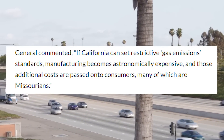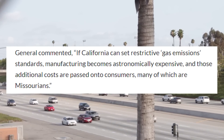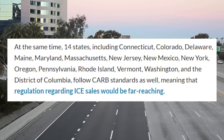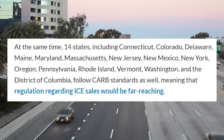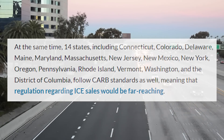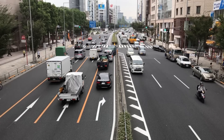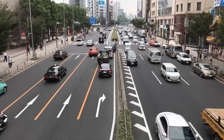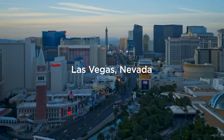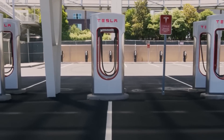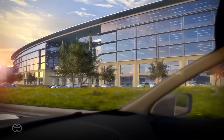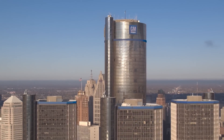The Missouri State Attorney General commented: if California can set restrictive gas emission standards, manufacturing becomes astronomically expensive, and those additional costs are passed on to consumers, many of which are Missourians. At the same time, 14 states — including Connecticut, Colorado, Delaware, Maine, Maryland, Massachusetts, New Jersey, New Mexico, New York, Oregon, Pennsylvania, Rhode Island, Vermont, Washington, and the District of Columbia — follow CARB standards as well, meaning that regulation regarding ICE sales would be far reaching. Legally, the opposition argues this attempts to regulate what the federal government considers interstate commerce. CARB has long faced legal challenges from states and companies like Toyota and GM, though both have since withdrawn their requests.